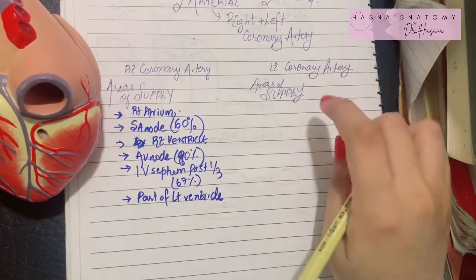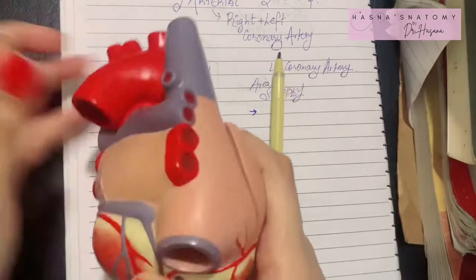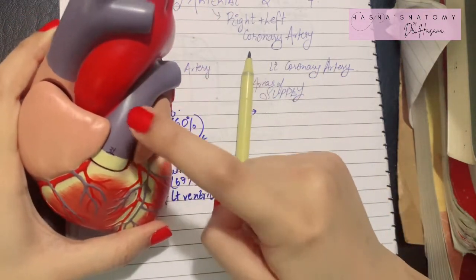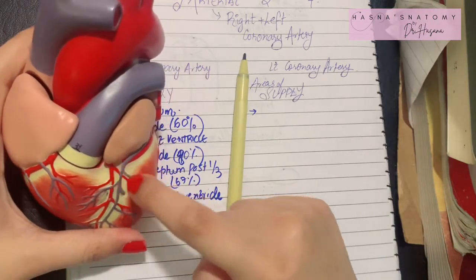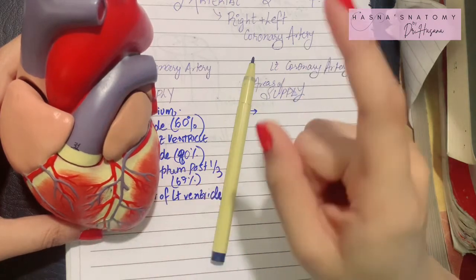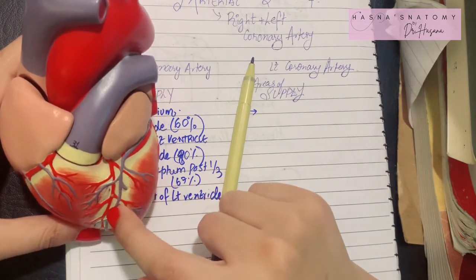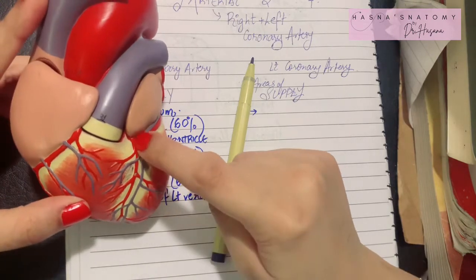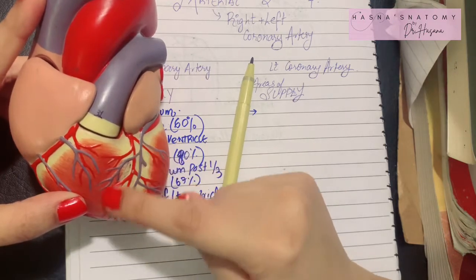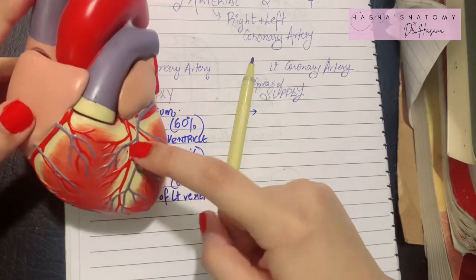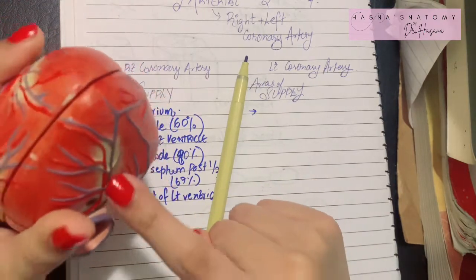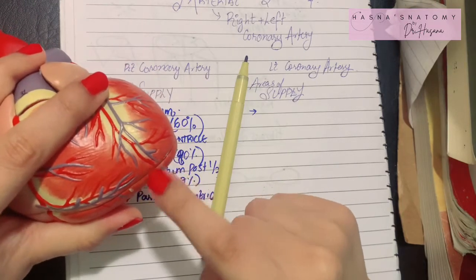Now let's talk about the left coronary artery. The left coronary artery also arises from the ascending aorta in the left aortic sinus, after which it passes between the pulmonary trunk and the left auricle and emerges at the coronary sulcus. Once it enters the coronary sulcus it gives its first branch called the anterior interventricular branch, also known as the left anterior descending or LAD branch — a very important branch. This LAD branch supplies the anterior two-thirds of the interventricular septum and the adjacent part of the right ventricle, and goes all the way to the apex where it anastomoses with the right posterior interventricular branch.